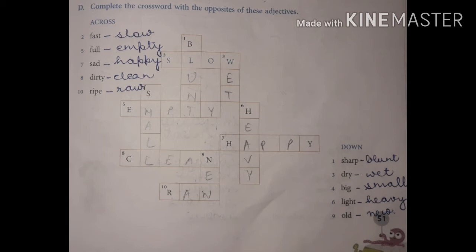And down: the first one, sharp is blunt. Third one, dry is wet. Fourth one, big is small. Sixth one, light is heavy. And ninth one, old is new. So all of you try to fill up the crossword and turn the page.